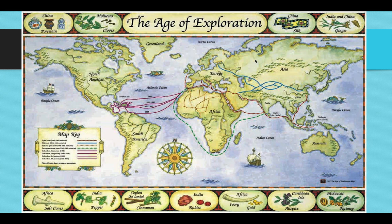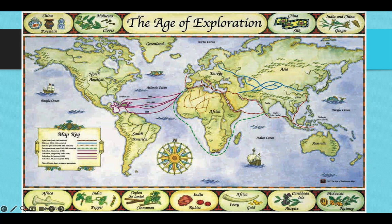Why did Europeans even want to sail there? They wanted to trade with China. Traditionally they would go across the Silk Road, but by this point the Ottoman Empire had essentially monopolized trade along the Silk Road and only allowed countries they were allied with — Italy — to trade along that route. So Italy had a very robust trading system, trading with the Ottomans all the way to China and back. Marco Polo was from Italy and traveled from China back to Venice. The rest of Europe — France, Portugal, Spain, England — were not able to trade with China along the Silk Road and had to find a different route.